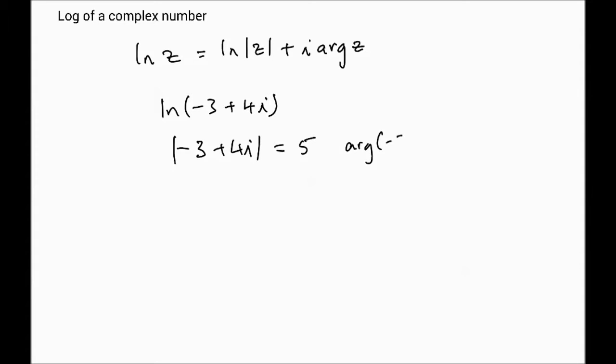The argument of minus 3 plus 4i turns out to be 2.214, and that's after drawing it. Let me quickly show you: minus 3 means here, and 4i, so 1, 2, 3, 4, so we're talking here. That's your Argand diagram for the minus 3 plus 4i, which means the angle is this, which means pi minus, so we get 2.214.